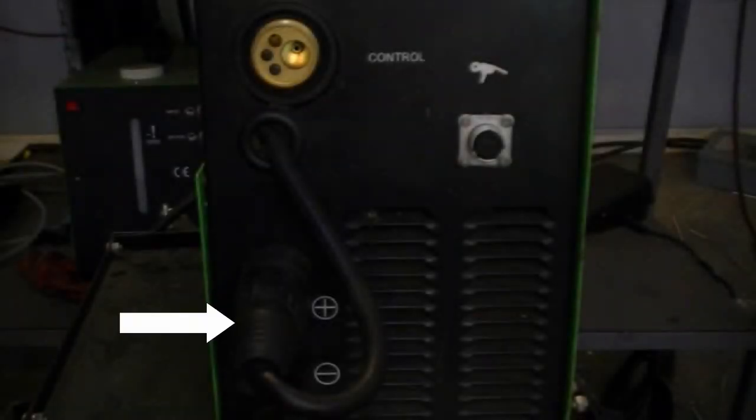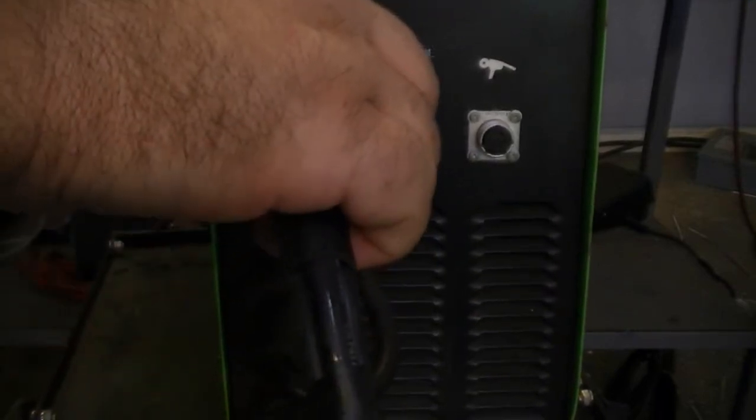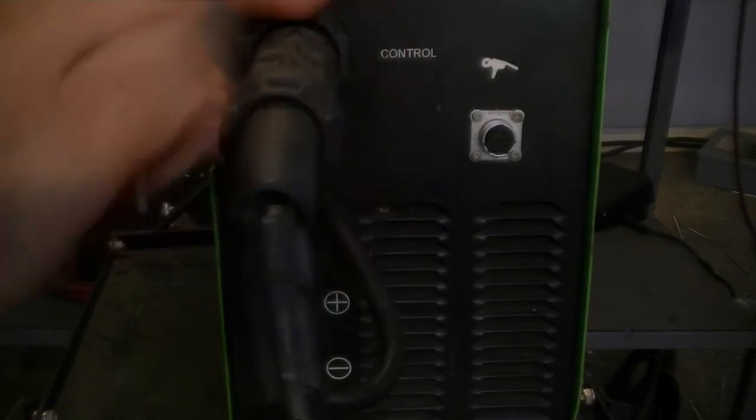To connect the MIG gun to weld aluminum, make sure the unit is set up for positive polarity. Insert the connector at the MIG gun connection point, then install the control wire.